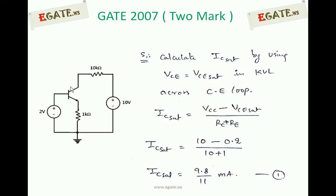Saturation is indicated by VCE = 0.2 volts. In saturation, IC_sat and IB are independent of each other — IC is IC saturation and IB is the actual current flowing into the base. Since base current is neglected, we separately calculate the current through the 1 kΩ resistor from the input side and the output side. The current flowing through the emitter from the output loop is IC saturation.